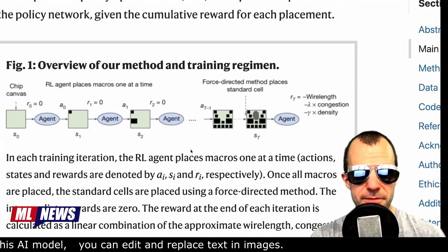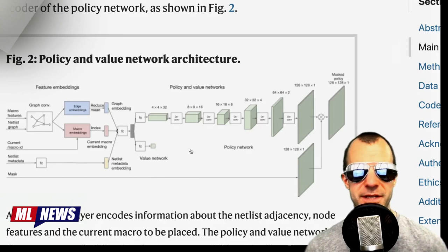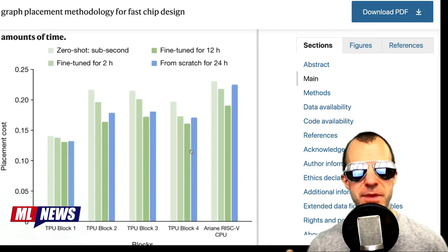The reward function has the agent minimize wire length, congestion, and density. The neural part of the system uses graph convolutional networks with fairly standard policy and value network architectures. From this, we can expect better and more customizable chips in the future — essentially making it possible to build individual chips for different purposes much faster and cheaper.